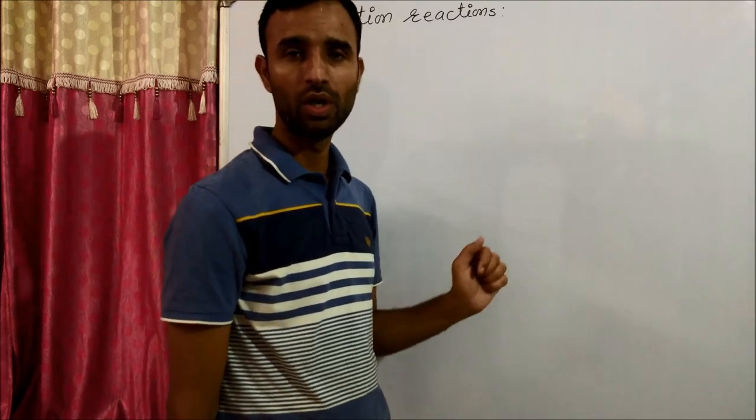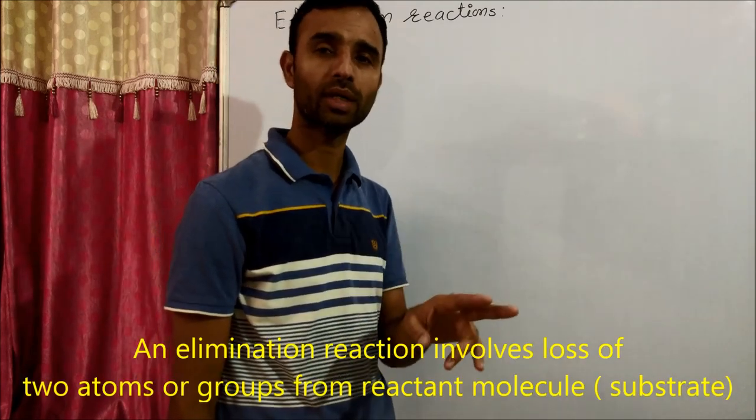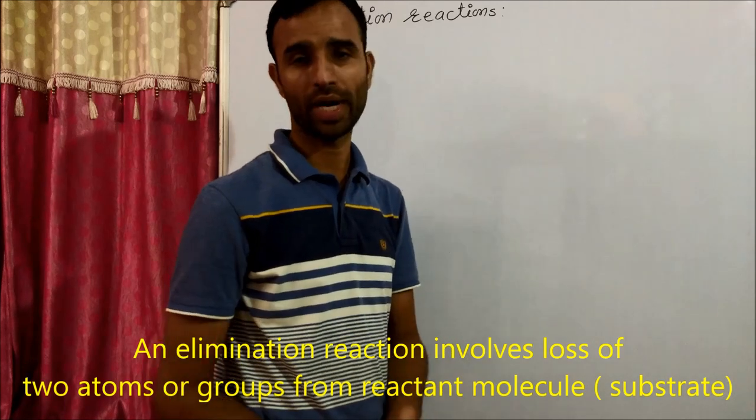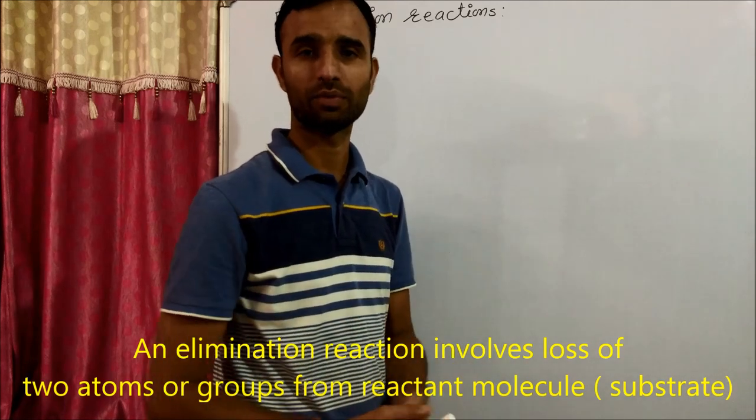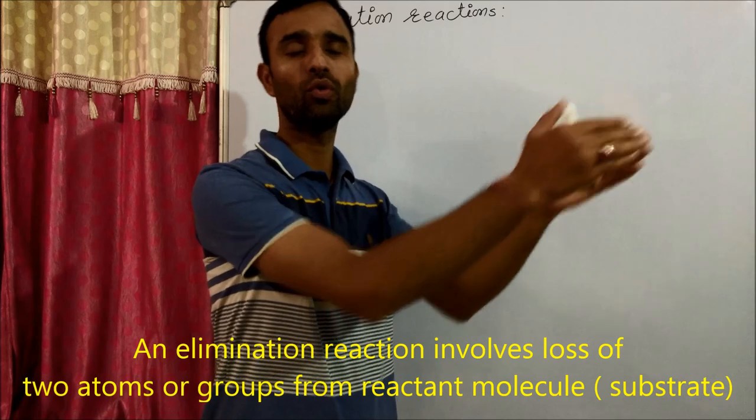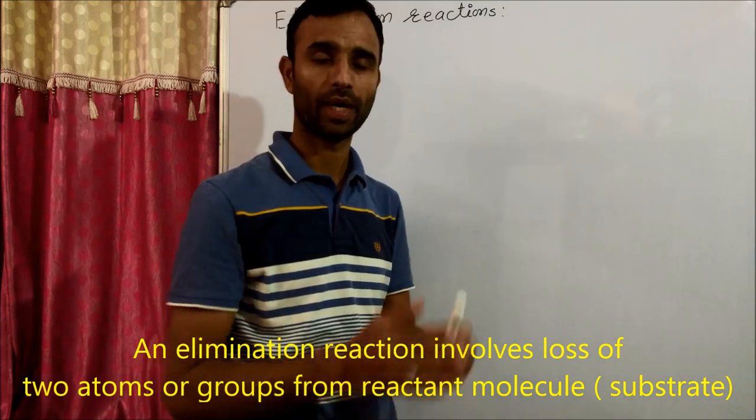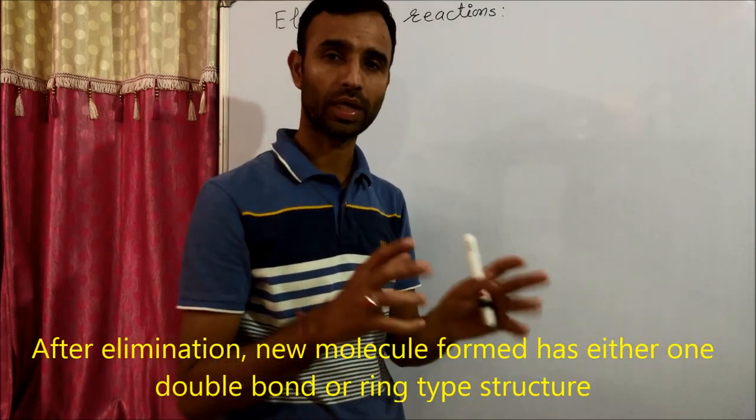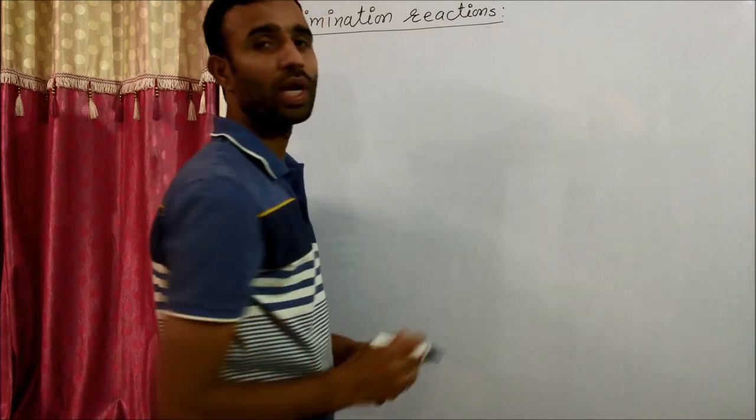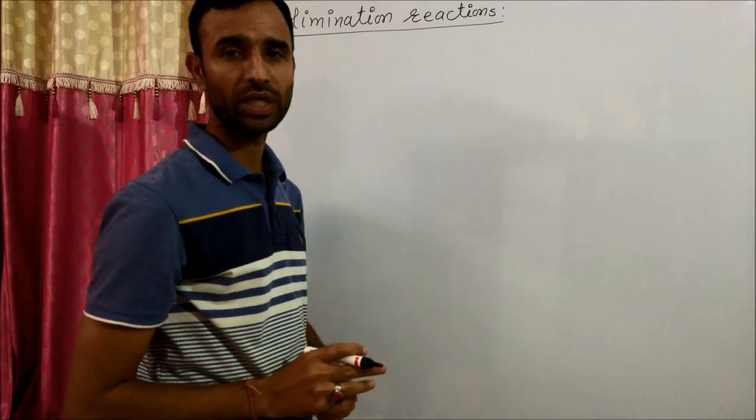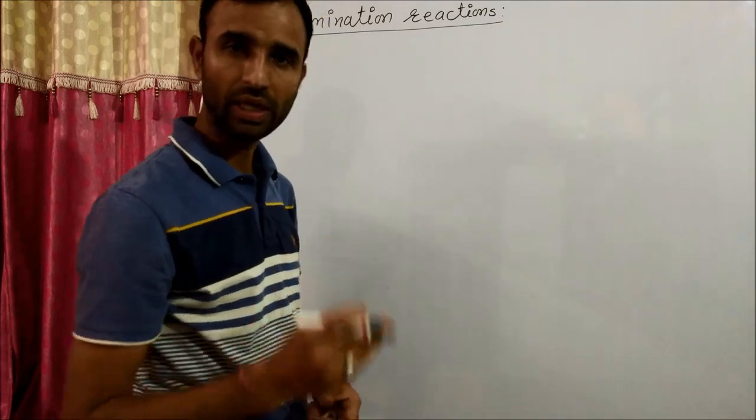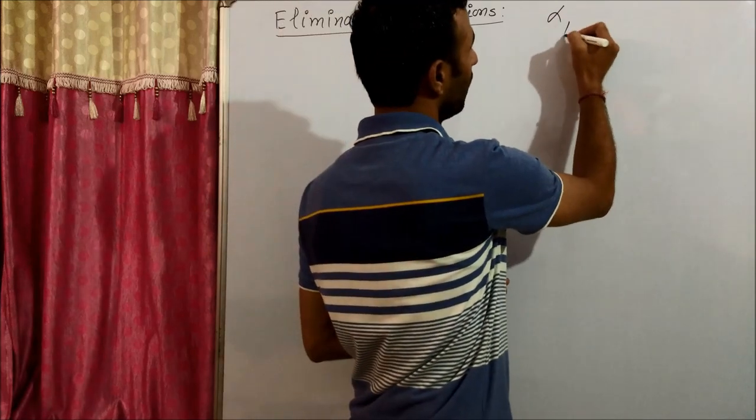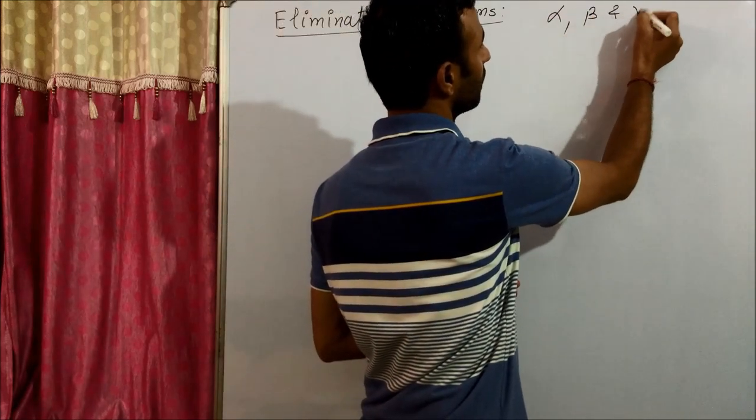An elimination reaction involves loss of two atoms or groups from the substrate to give a new molecule with either a multiple bond or a ring structure. One way of classifying elimination reactions is by Greek letters: alpha, beta, and gamma.